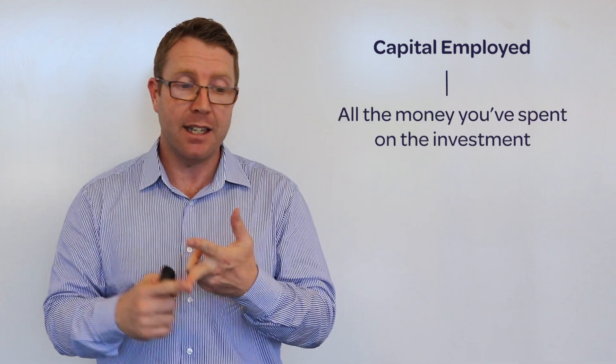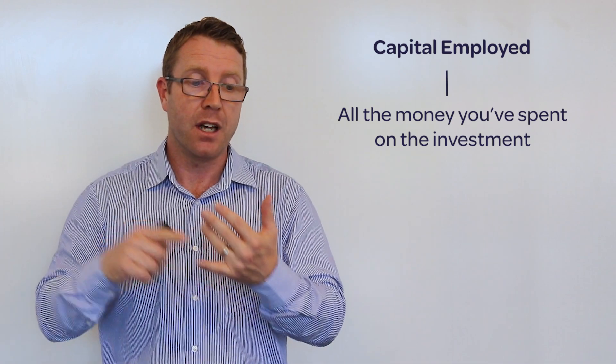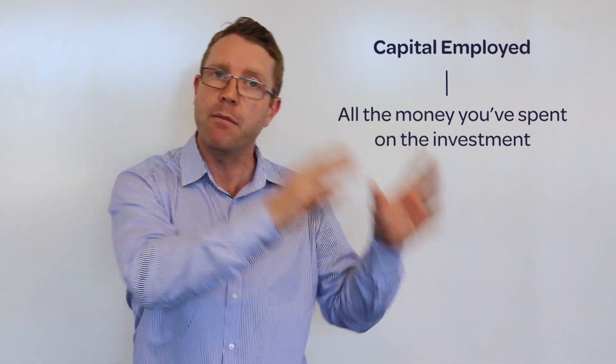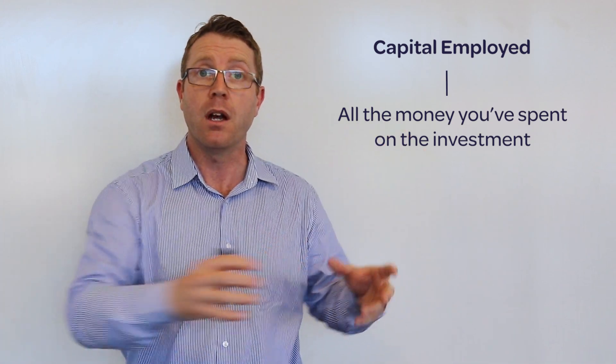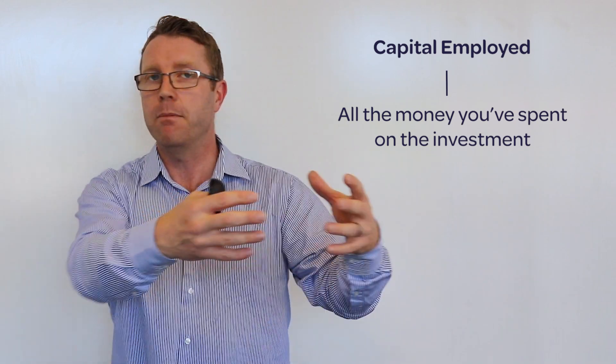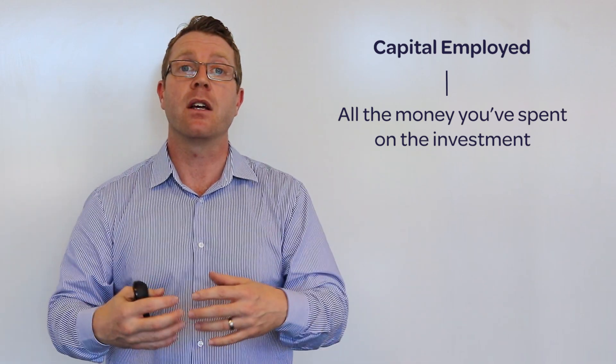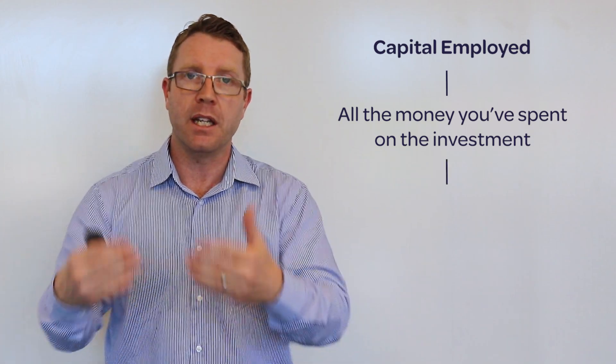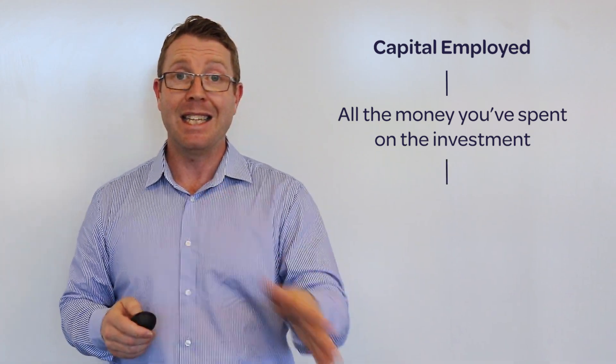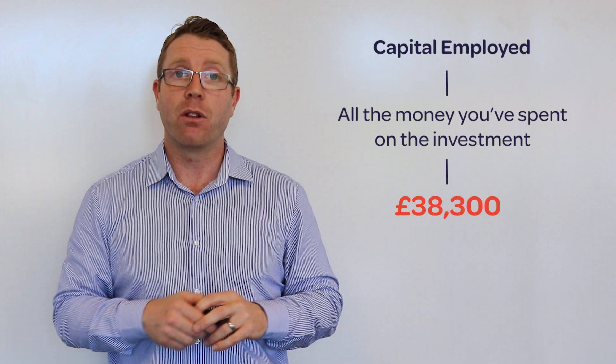Now the capital employed — how do we calculate the cost of the investment? It's everything that you've put into it: the deposit, the solicitor's fees, the surveys and searches, the refurb, the selling costs — all the same figures used previously, but you're just grouping them together, working out all of the money you've spent on that investment. In this case, it's £38,300.